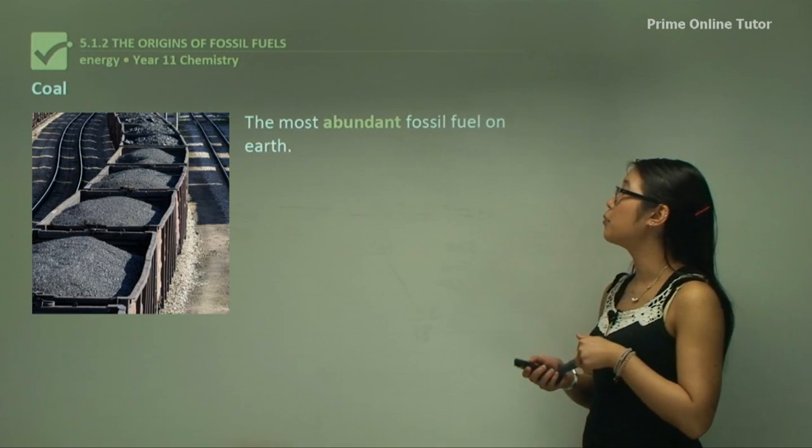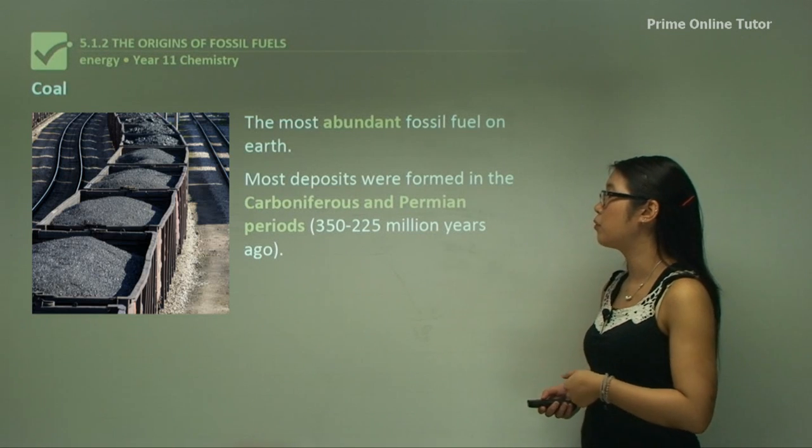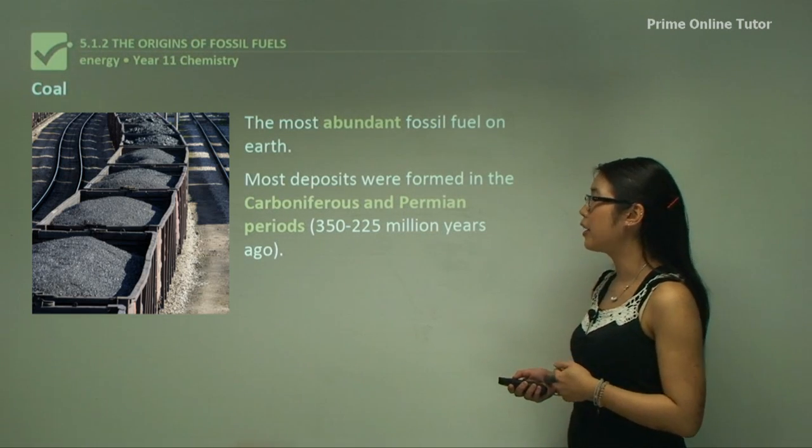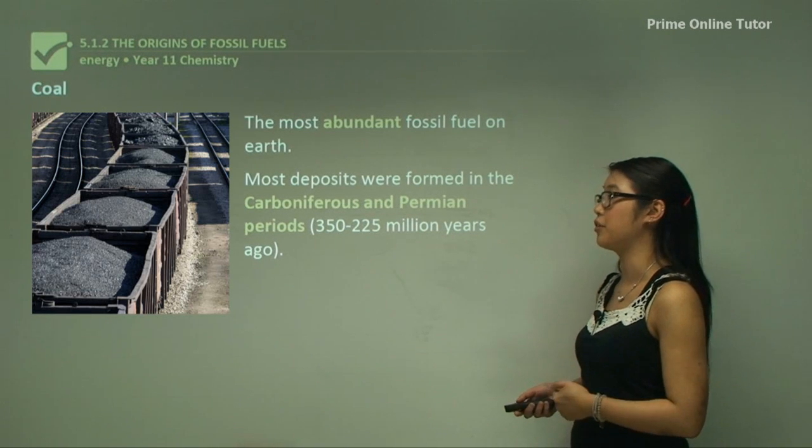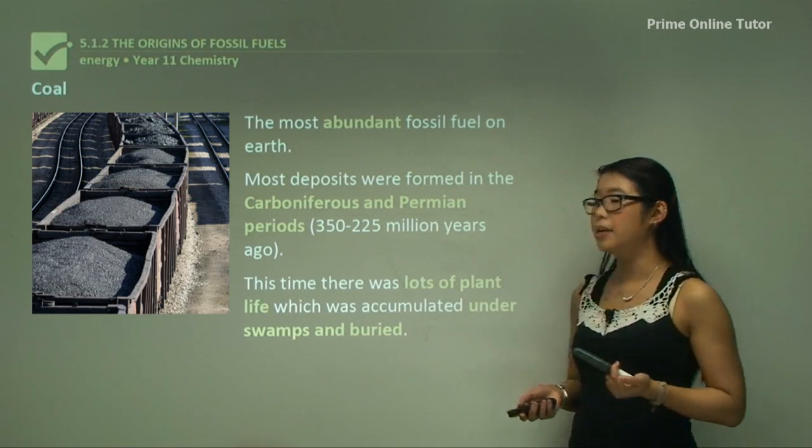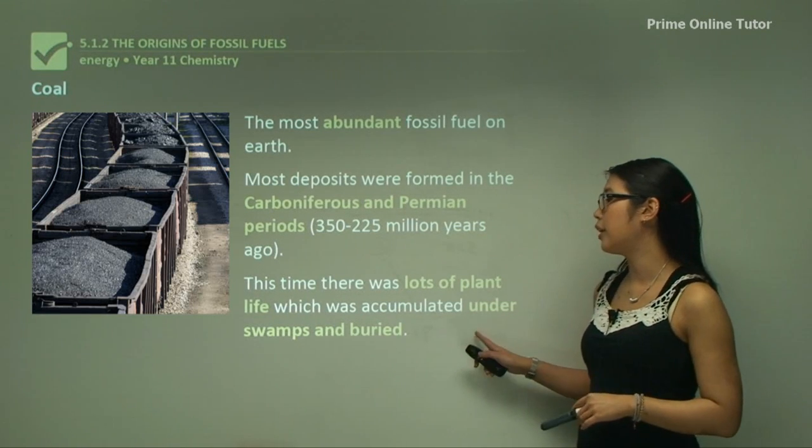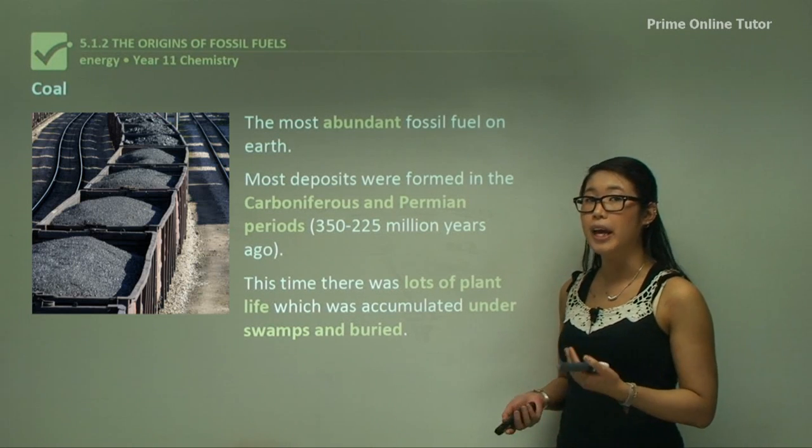Coal is the most abundant fossil fuel on Earth. Most deposits were formed in the Carboniferous and Permian periods, about 350 to 225 million years ago. During this time there were a lot of plants, and many died and accumulated under swamps and were buried, so they weren't fully decomposed in the air.